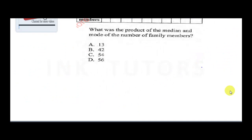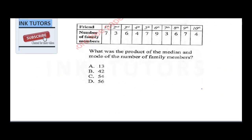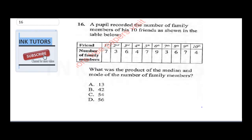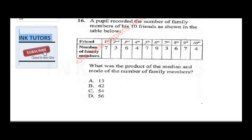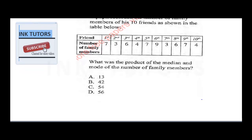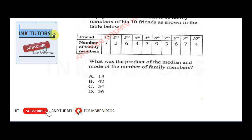That will take me to question 16, which says, what was the product of the median and the mode of the numbers? Let's read the question from the beginning. It says the pupil recorded the number of family members of his 10 friends as shown in the table below. What was the product of the median and mode of the numbers of family members? Now the first thing I would want you to do is to arrange this. We need to arrange it. Now first of all, the lowest number here is 3.